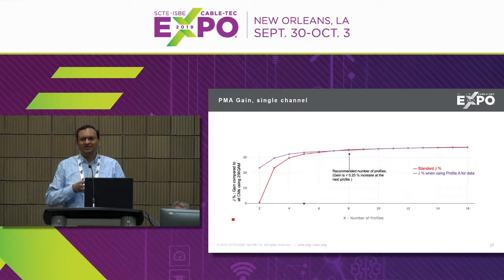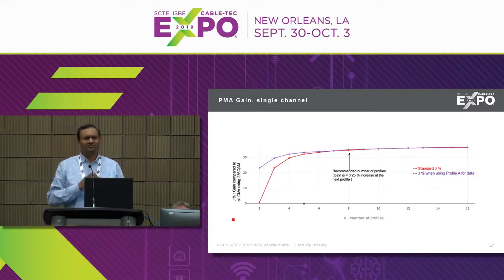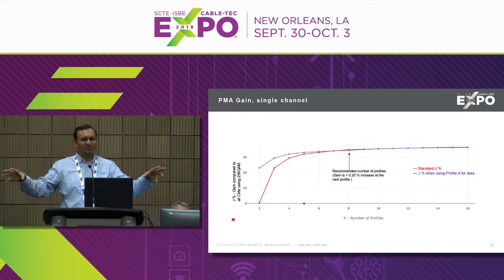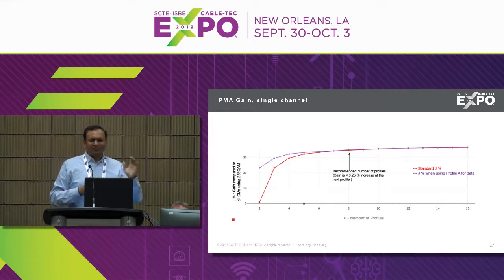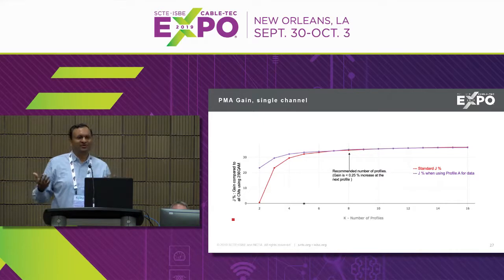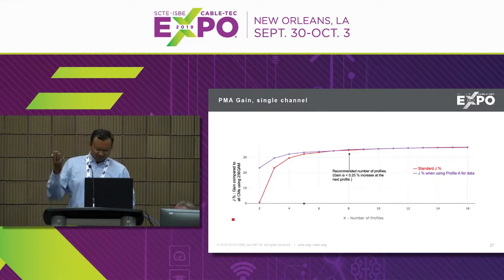The gains from designing custom profiles — working around LTE noise or in the roll-off — follow a standard curve. As the number of profiles increases, I can customize profiles to different sets of modems: one set may be seeing LTE ingress, others may be in the roll-off. I can create separate profiles and get better robustness and capacity. The gain in capacity starts leveling off as profiles increase. At some point, one more profile gets you only 0.2% increase in capacity — and it becomes an operator decision where to stop.